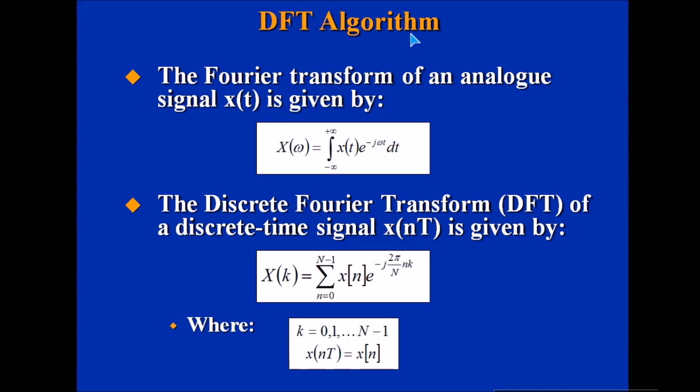The DFT algorithm: Let's look back to Fourier transform. The Fourier transform of an analog signal x(t) is given by this equation. When we talk about Discrete Fourier Transform (DFT), a discrete time signal x(nT) is given by this particular expression. This expression will be used quite often in later slides, so you need to look very closely at it.